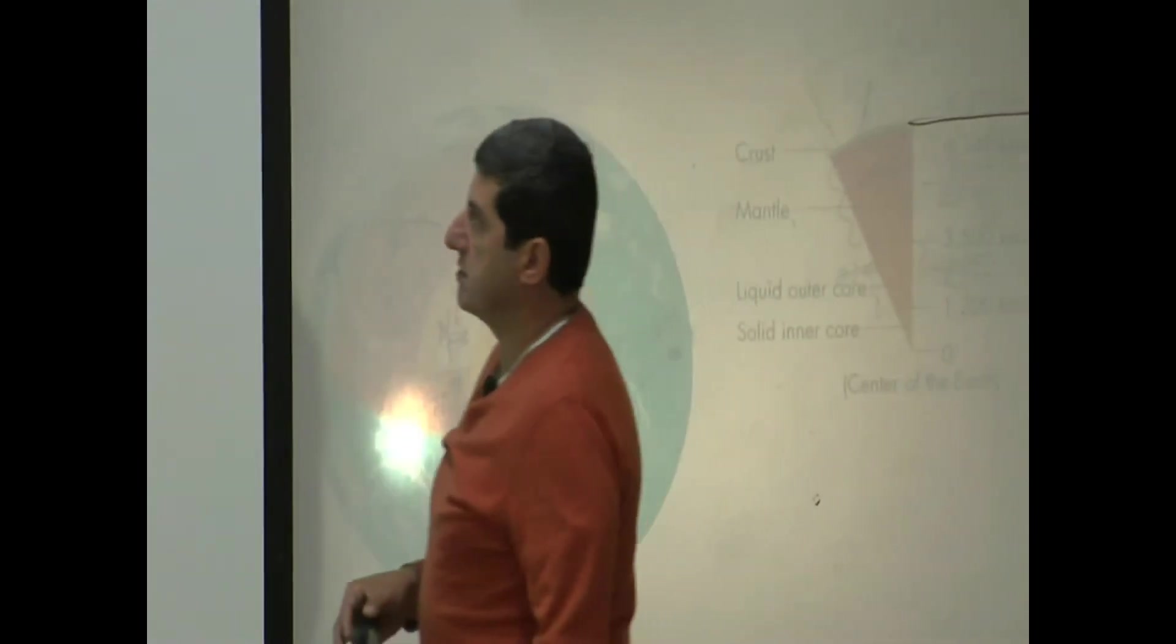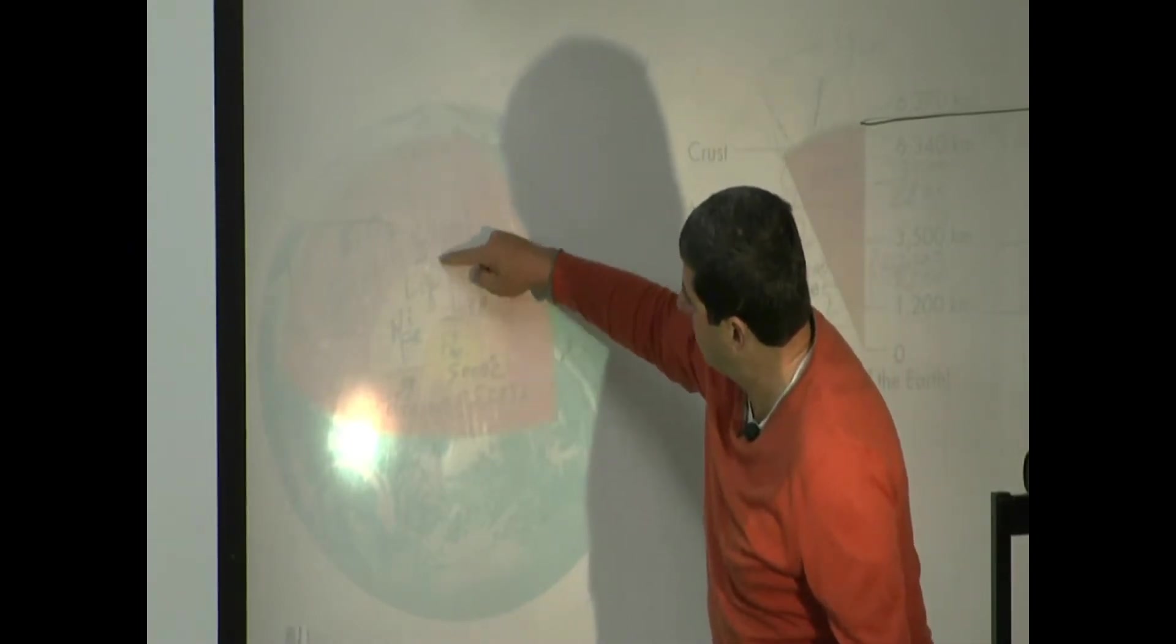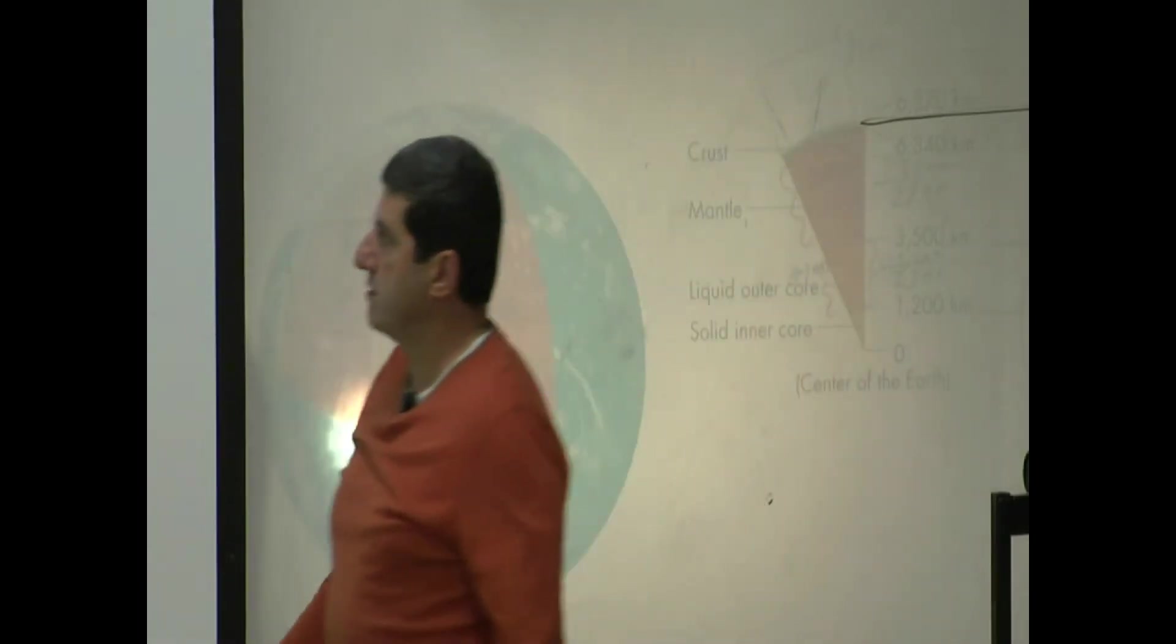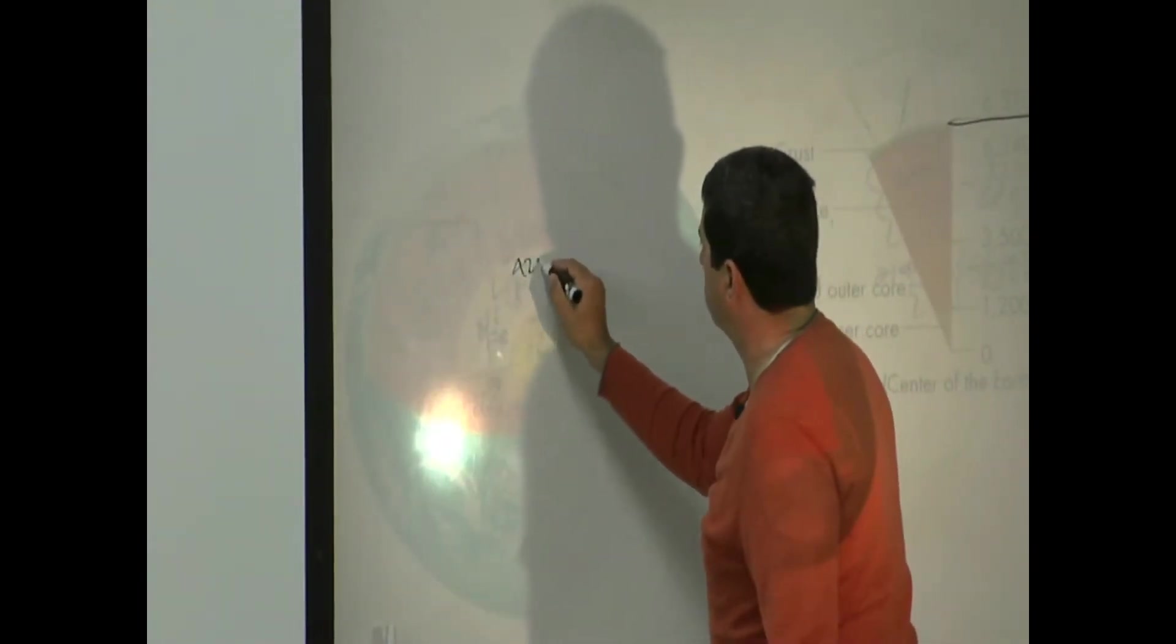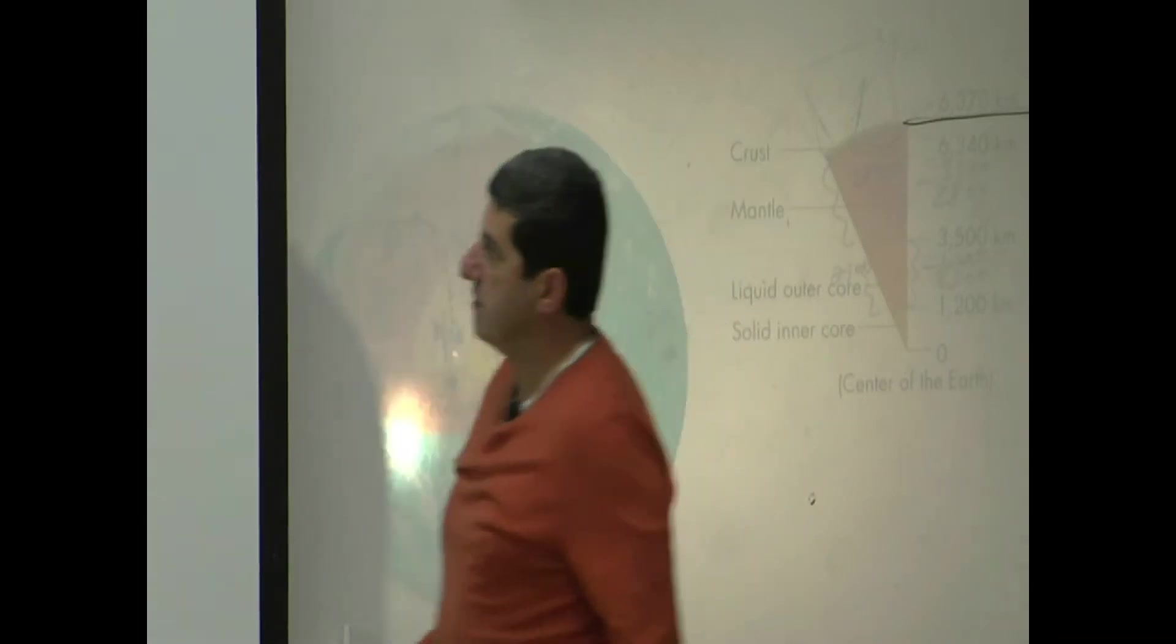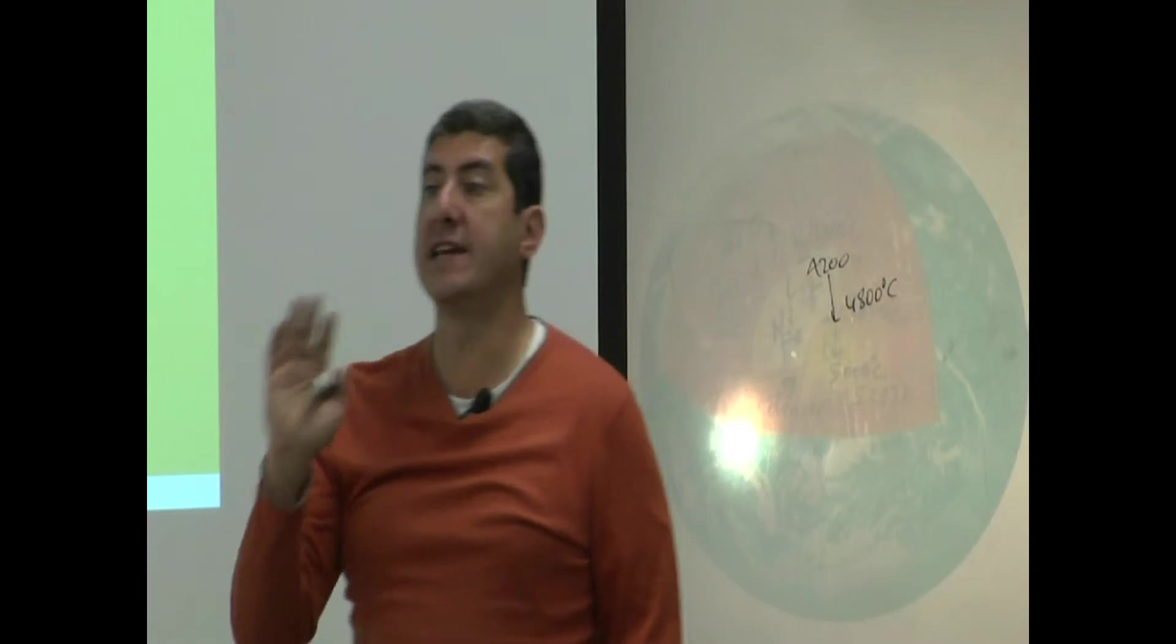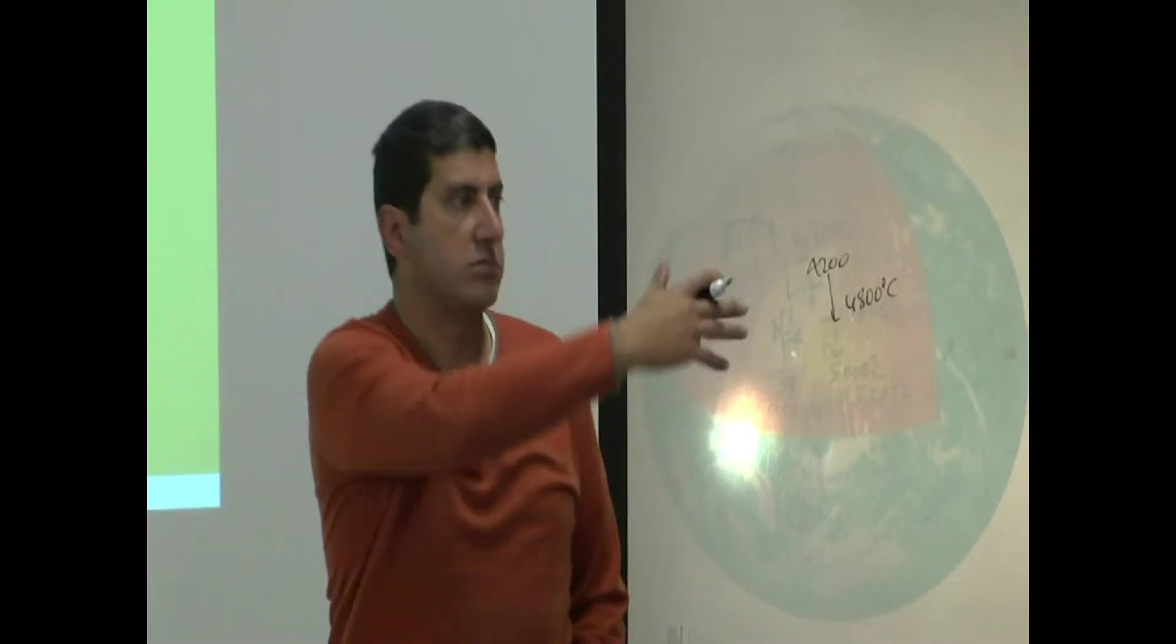When you go here, you get 6,000 to 4,200. By the time you get to this part is liquid nickel and iron. The temperature goes from 4,200 to 4,800 here. We have good evidence that this core of the Earth, the outer core, is actually liquid. It doesn't just flow like a liquid, it actually has the properties of liquid. It's basically like an ocean.